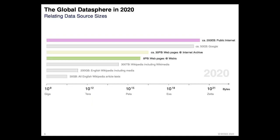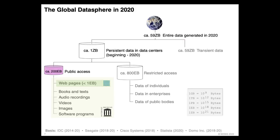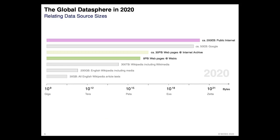To give more perspective on how much data we're talking about: at the top you see the 200 exabytes again. For comparison, Google is estimated to store about 50 exabytes in its many data centers throughout the world. The Internet Archive stores about 30 petabytes of web pages alone, and overall is maybe about a hundred to a hundred twenty petabytes, growing rapidly. You can see the scale difference — and it's exponential, not linear.